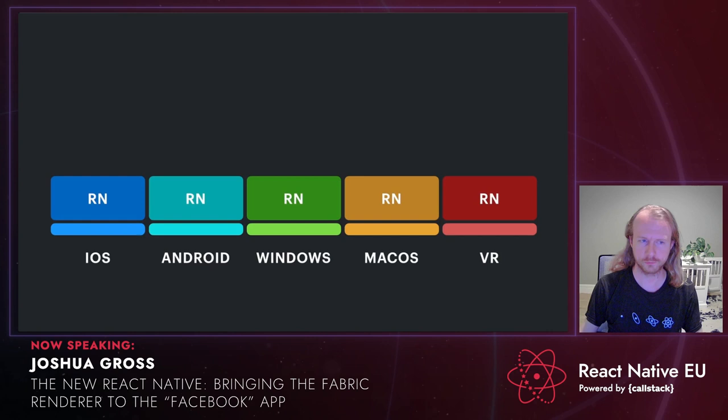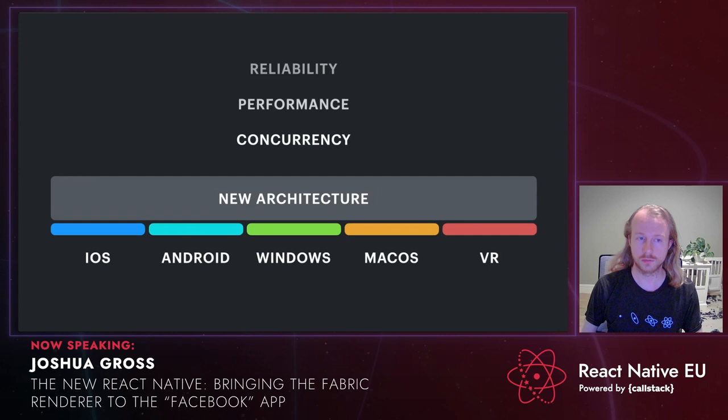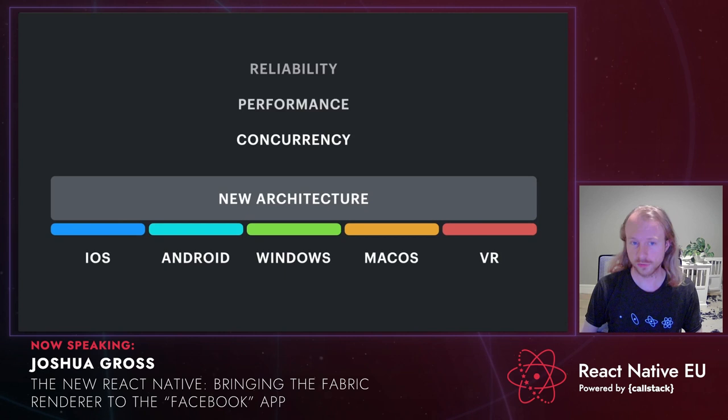In 2018, the React Native team embarked on a project to build a new architecture that would be future-compatible. We wanted concurrent rendering, better performance and reliability, but we didn't want to build this n times for every platform. Ideally, we could build these features once using a cross-platform implementation and deploy it to every platform.